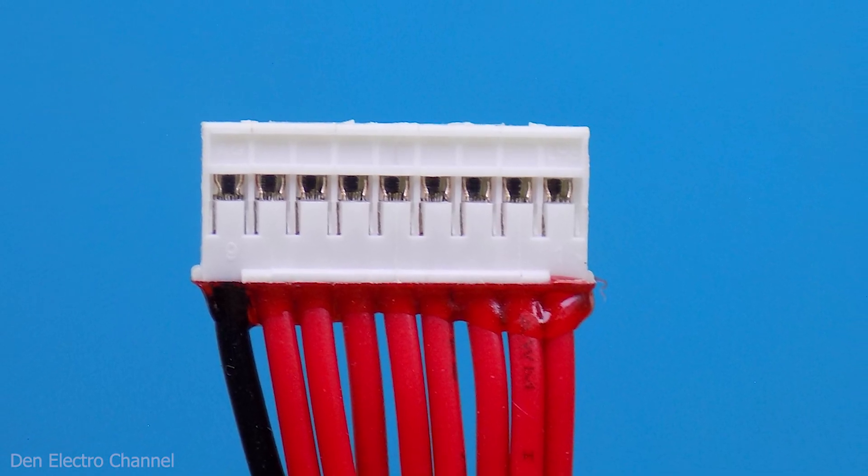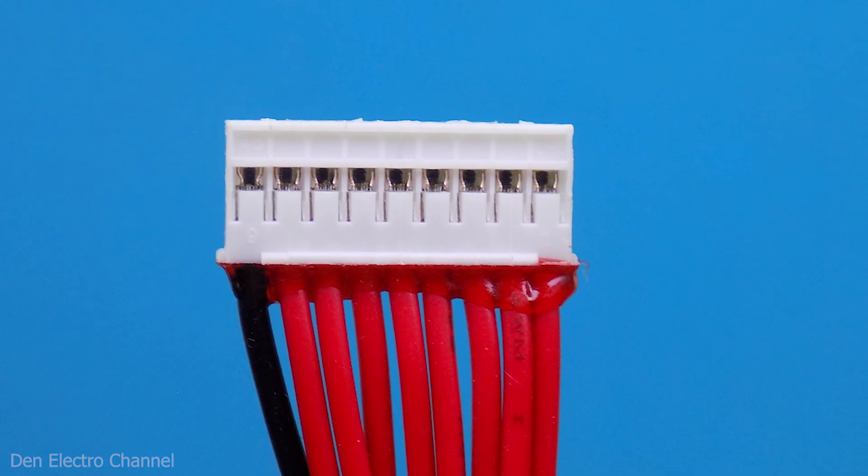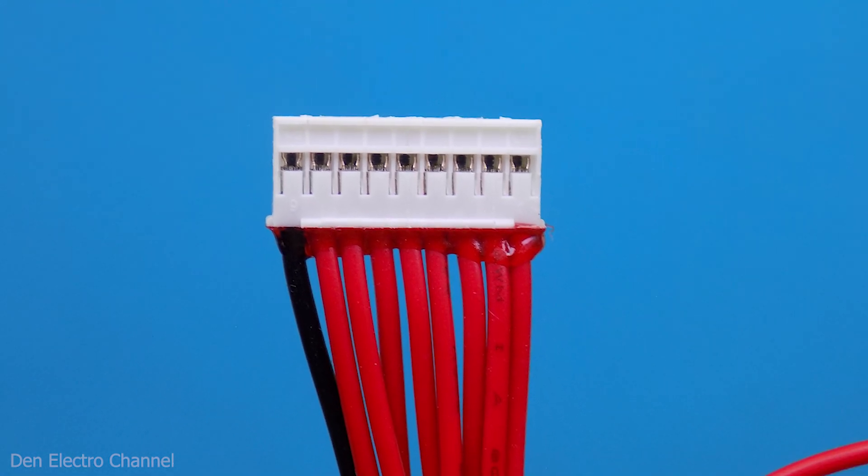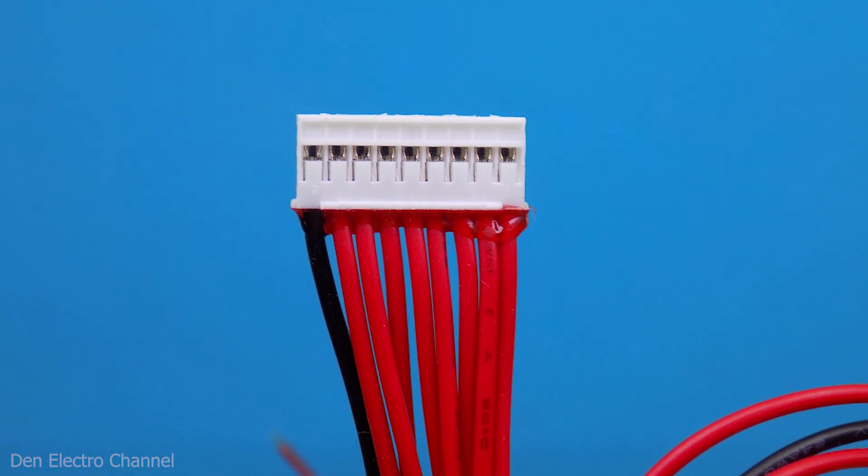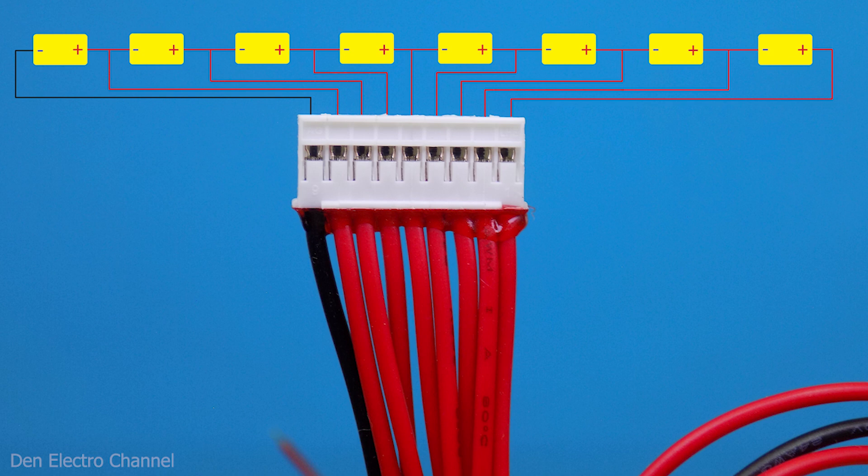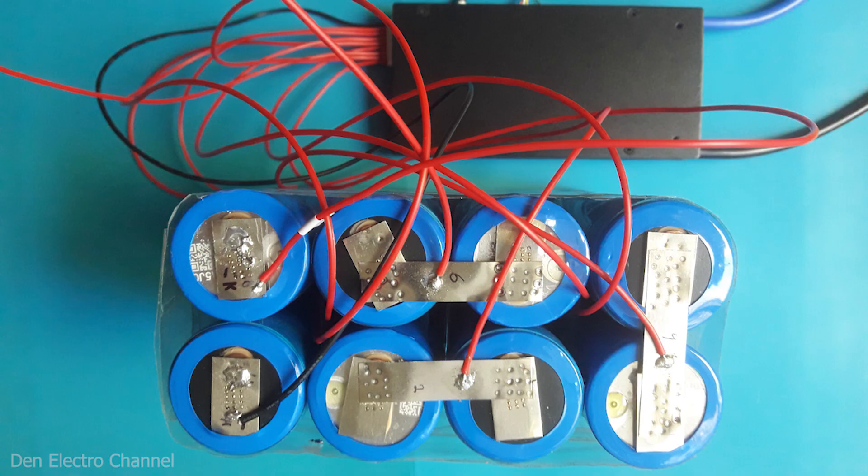So that the BMS can measure the voltage on each battery, it has this connector with a bunch of wires. I first inserted this connector into the BMS, and then starting with the black wire, I started soldering them to the batteries. The black wire will be negative, and the last red wire will be positive. Between them, there will be 24 volts. It turned out like this.